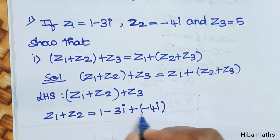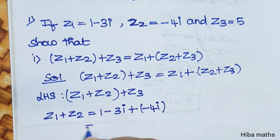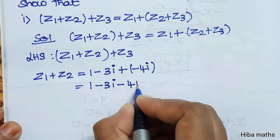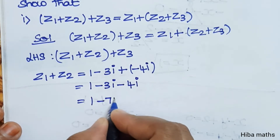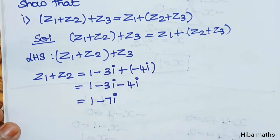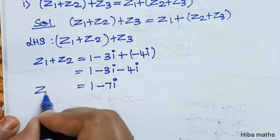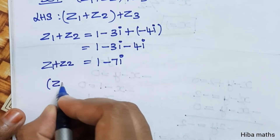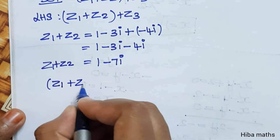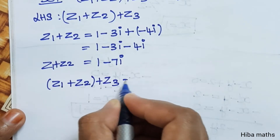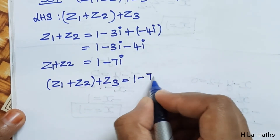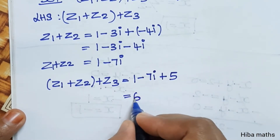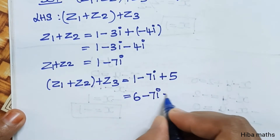Opening the bracket: 1 minus 3i plus minus 4i. Since both are minus, we add them: 1 minus 7i. That is the value of z1 plus z2. Now, z1 plus z2 value is 1 minus 7i, plus z3 value 5. So 5 plus 1 is 6, giving us 6 minus 7i.